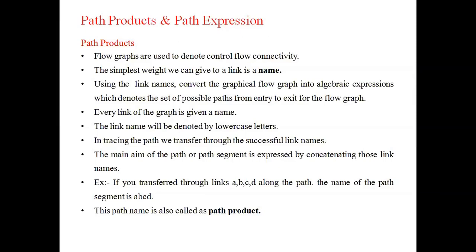Flow graphs are used to denote the control flow connectivities. This flow from entry to exit is represented by the links between one node to another node. These nodes are represented by links, and each link is represented with a name. This flow starts from the entry point to the exit point.